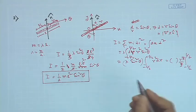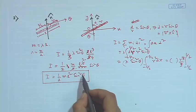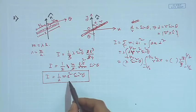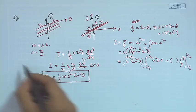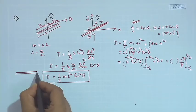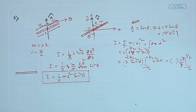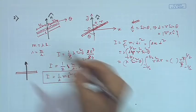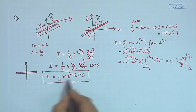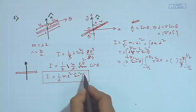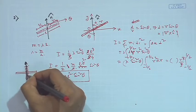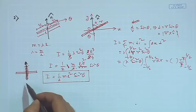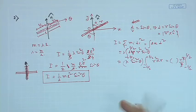Now, what happens if we change theta? If we put θ = 90°, we simply get I = (1/12) mL² — wait, actually the standard well-known result for a rod with axis perpendicular to it is (1/12)mL², which comes out naturally. If we put θ = 0°, meaning the rod is along the axis, then it is a one-dimensional object rotating about its own axis, so the moment of inertia vanishes. So the answer is I = (1/12) mL² sin²θ.